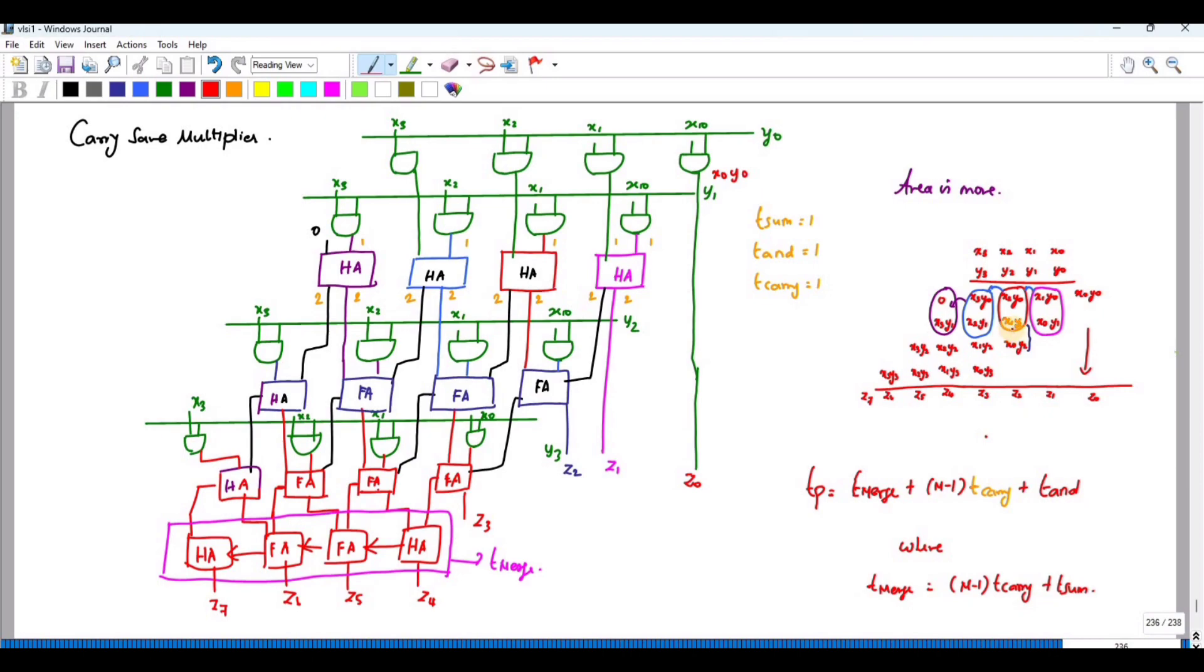This sum is added with x0y2 and carry of this one. By doing so, we will get the value of z2. And the carry of this one is passed downwards. For that, we require a full adder. If the input is 3, we require a full adder. If input is 2, we require a half adder. In similar way, we have drawn this circuit.